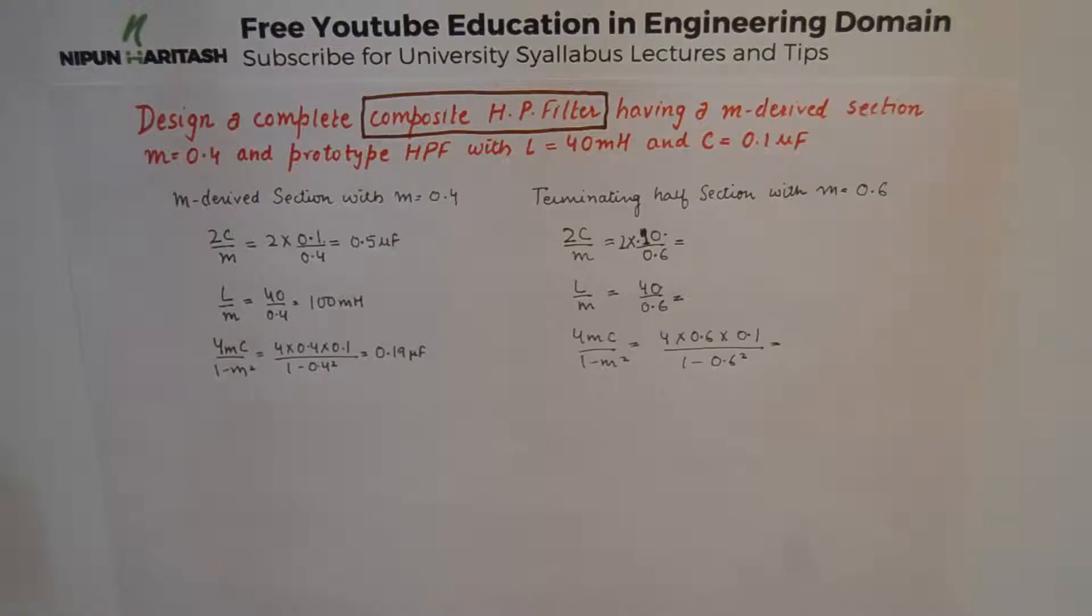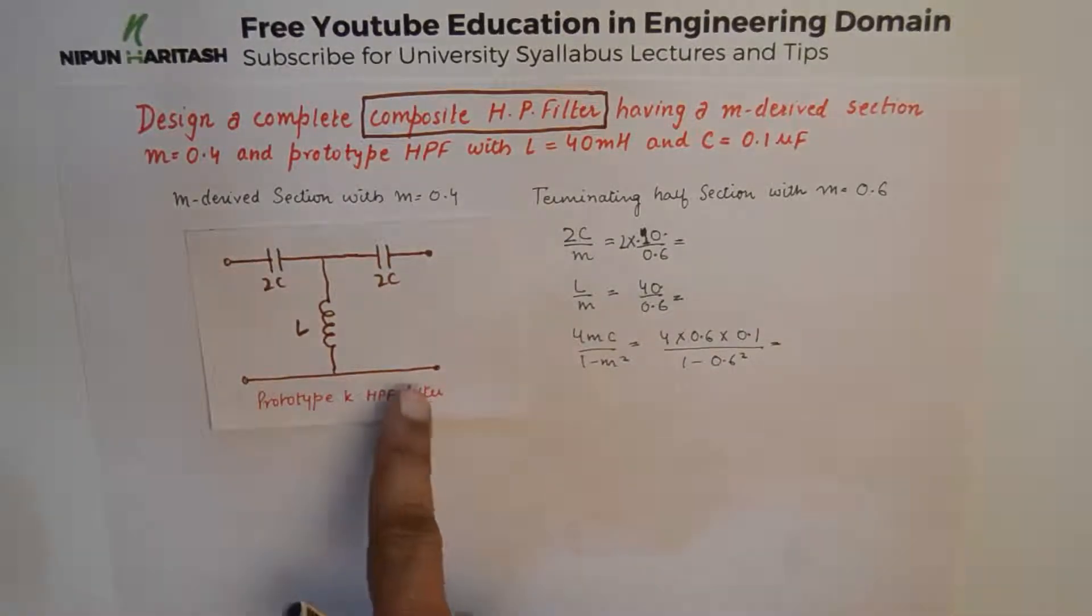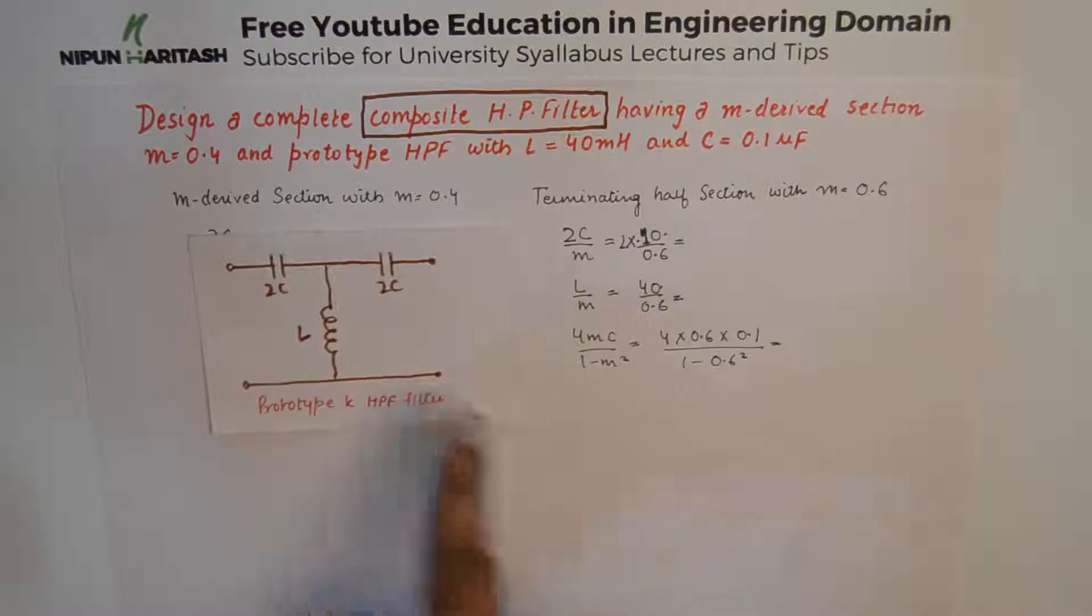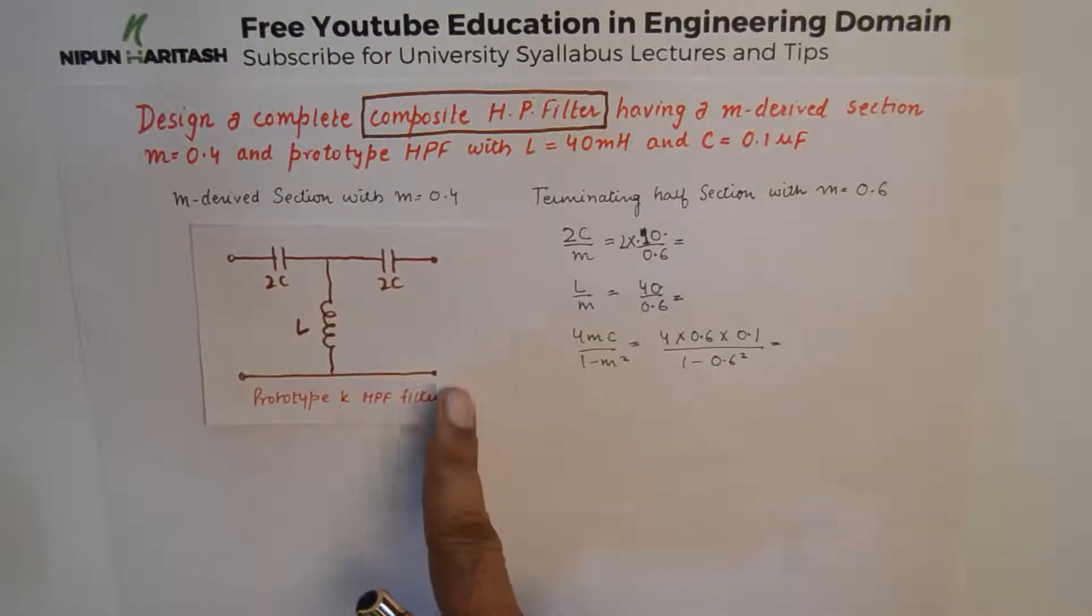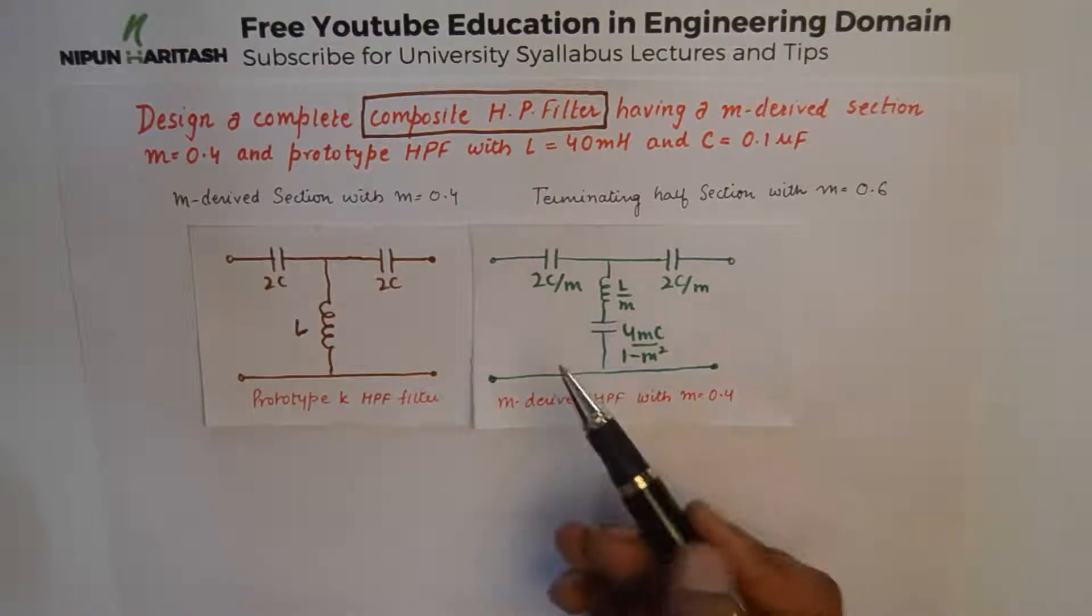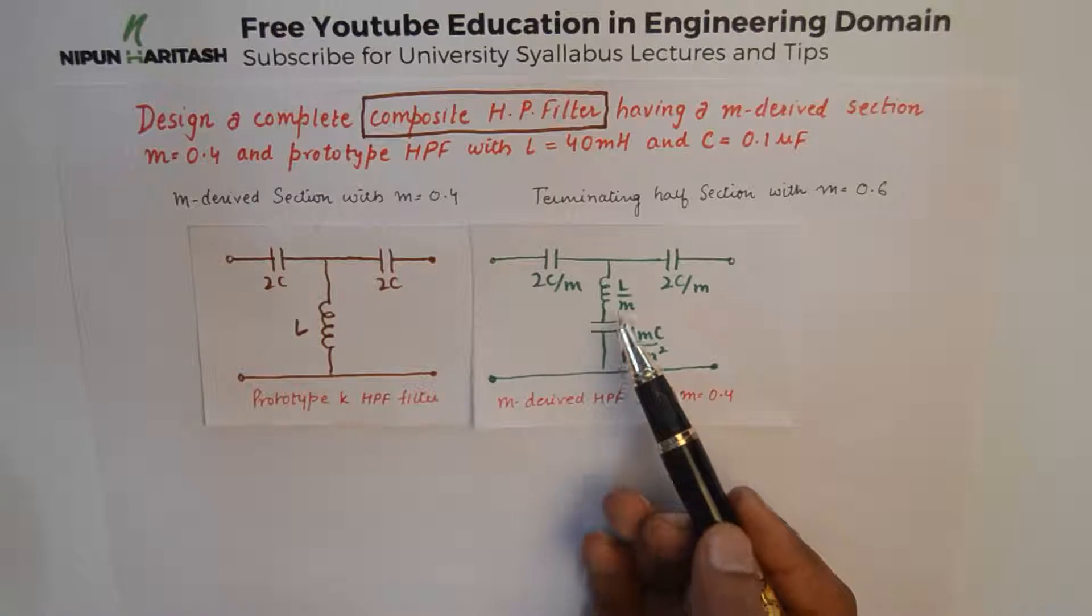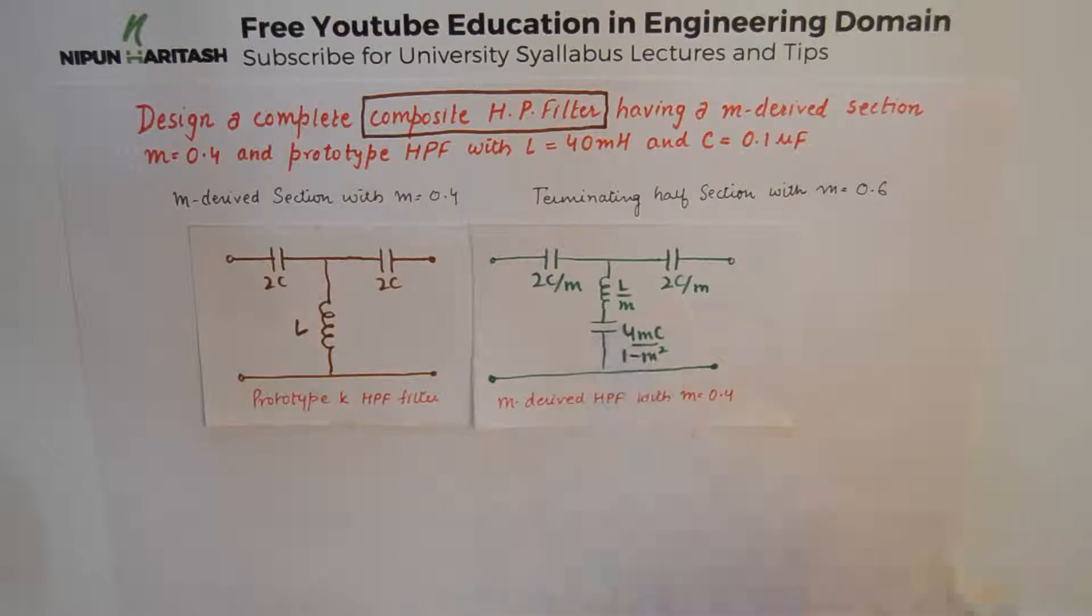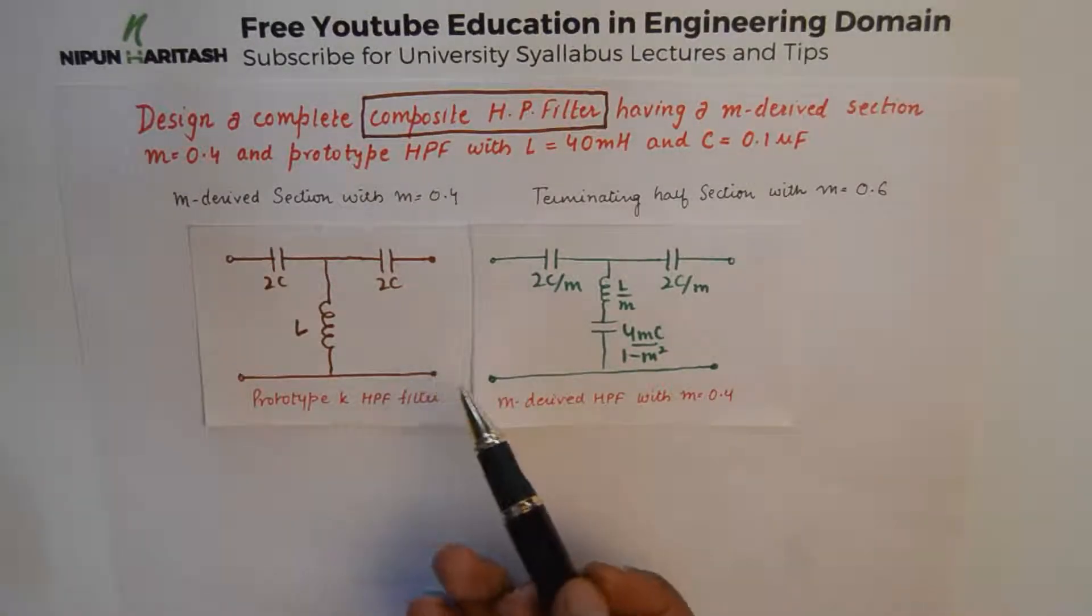So what we need to do here is draw three sections. One would be our prototype K high pass filter section with capacitors in the series arm and inductor in the shunt arm. The M derived high pass filter section has capacitors in the series arms but an additional component, this capacitance in the shunt arm.